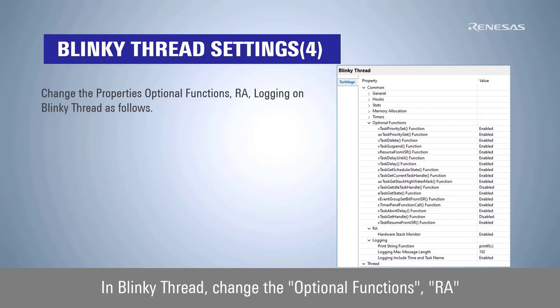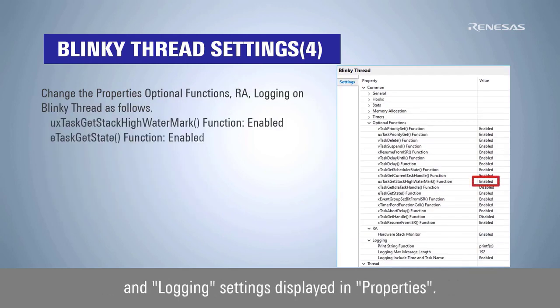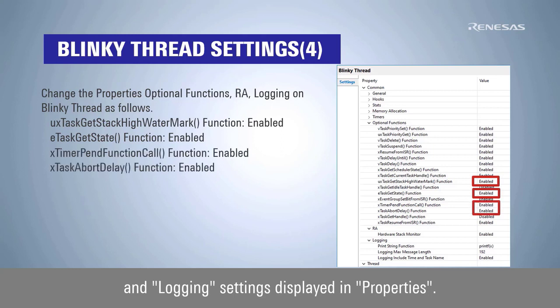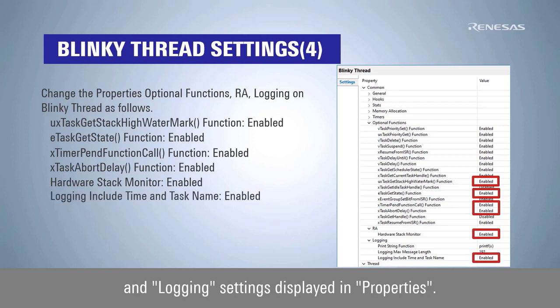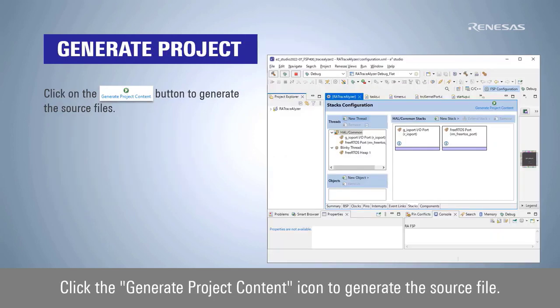In Blinky Thread, change the optional functions, RA, and logging settings displayed in Properties. Click the Generate Project Content icon to generate the source file.